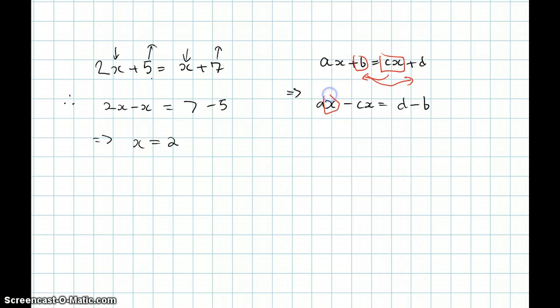Now how do we factorize this out, the x? Well, quite simple. Since it's the same variable, we can just make x times a minus c. This will give us x(a-c) equals d minus b. So if you want to make x a subject, all we have to do is take this a minus c to the other side. So x is equal to d minus b over a minus c.